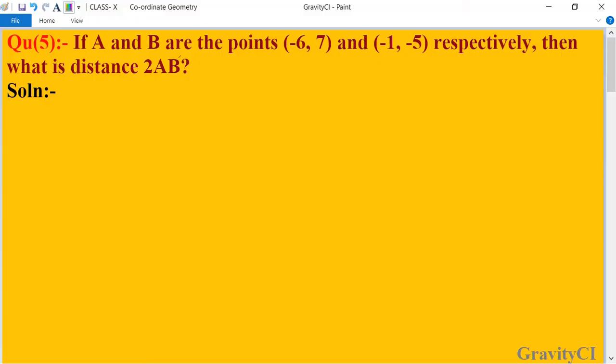Class 10 chapter coordinate geometry, question number 5: If A and B are the points (-6, 7) and (-1, -5) respectively, then what is distance 2AB? In this question, the coordinates of A and B are given: (-6, 7) and (-1, -5). We need to find the distance 2AB.